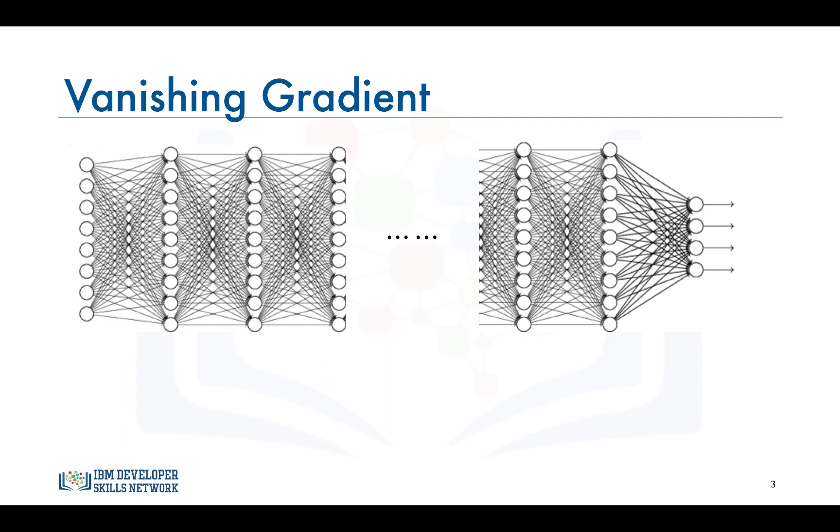So when we do backpropagation, we keep multiplying factors that are less than 1 by each other, and so the gradients tend to get smaller and smaller as we keep on moving backward in the network.